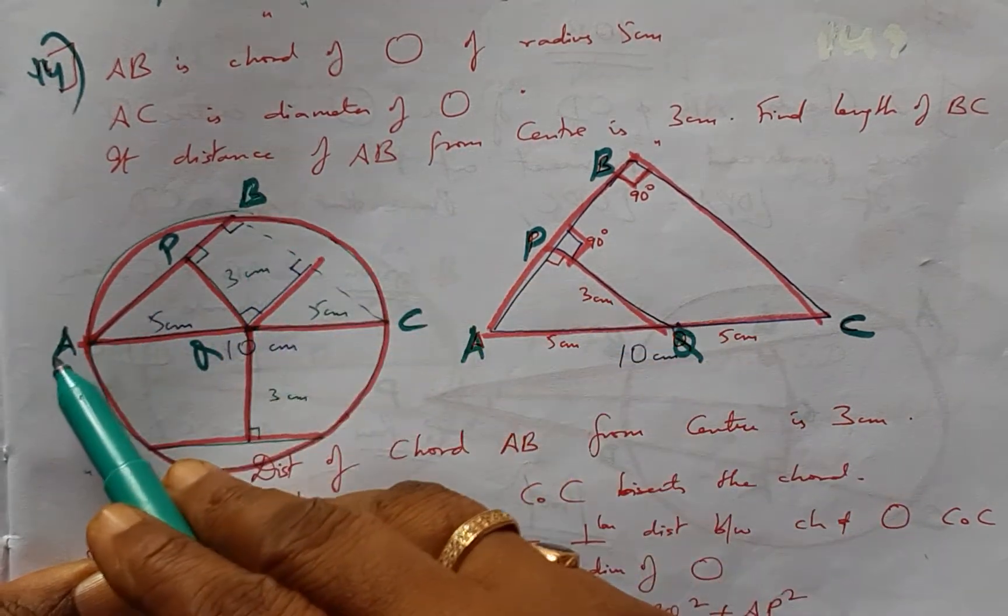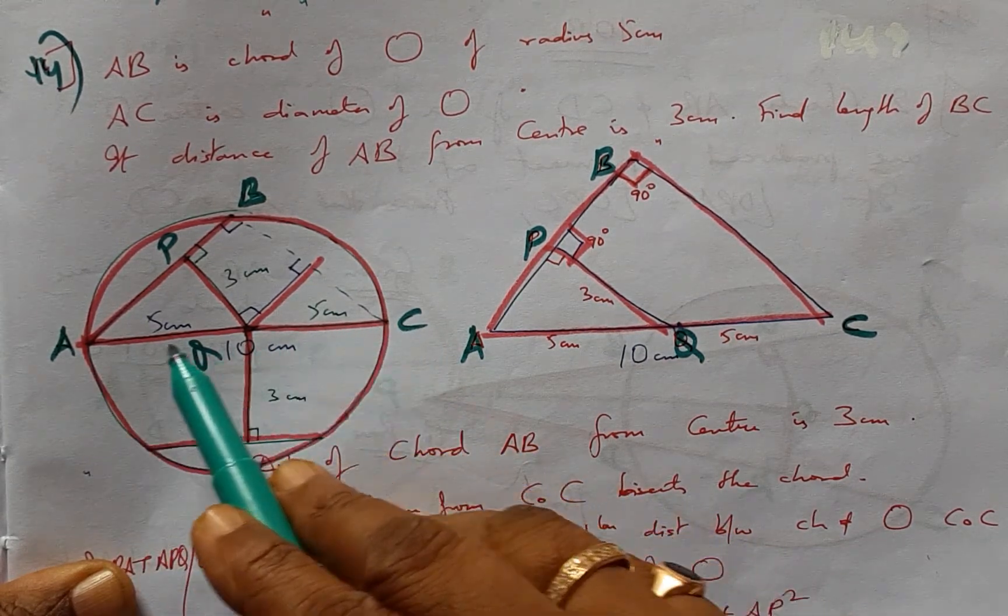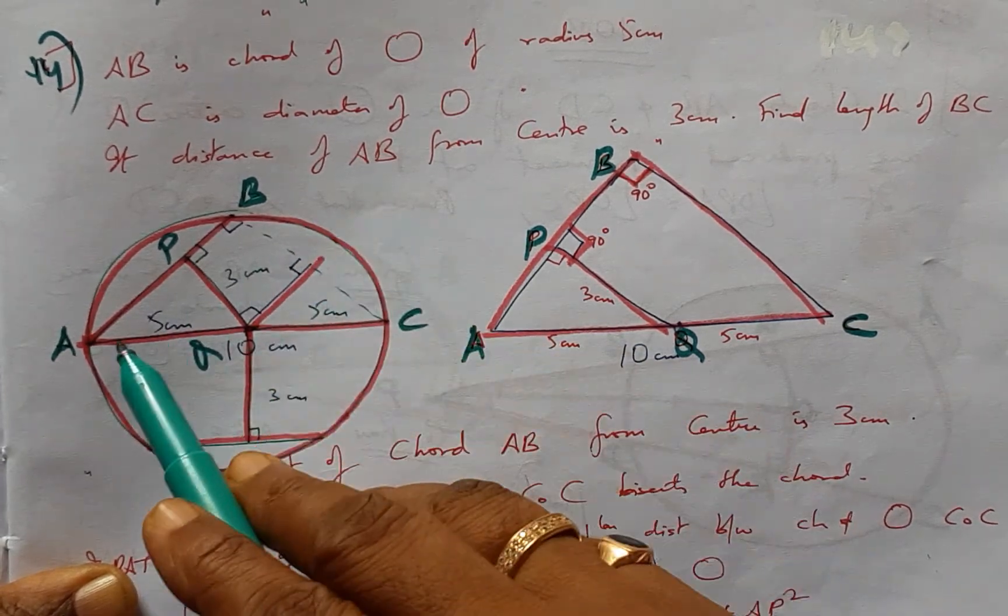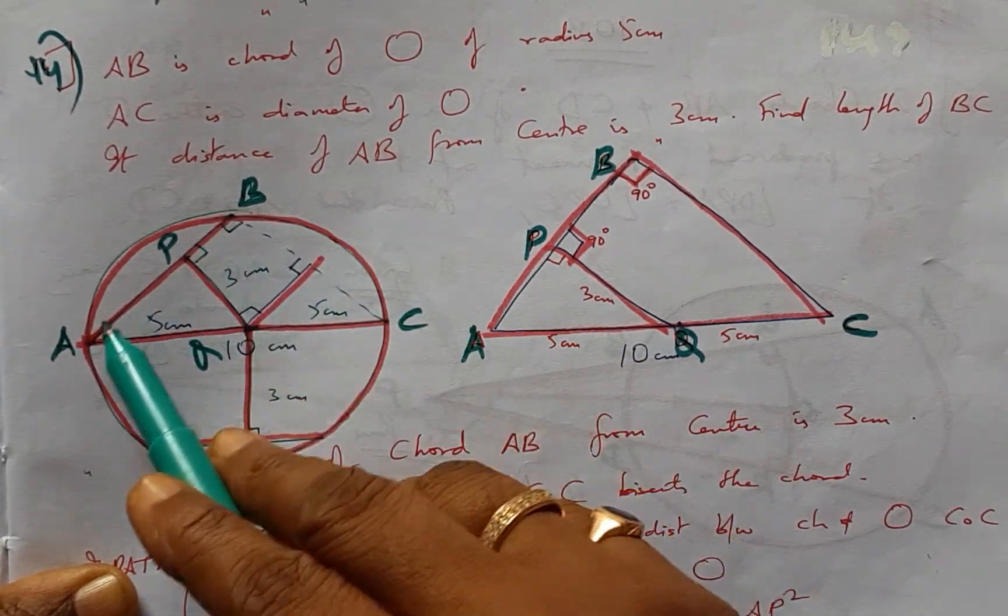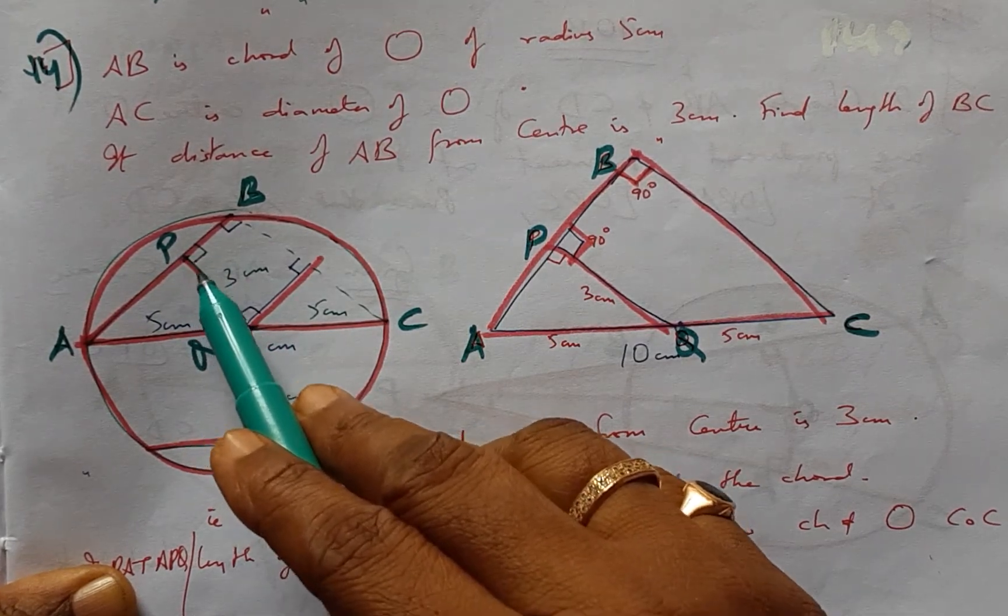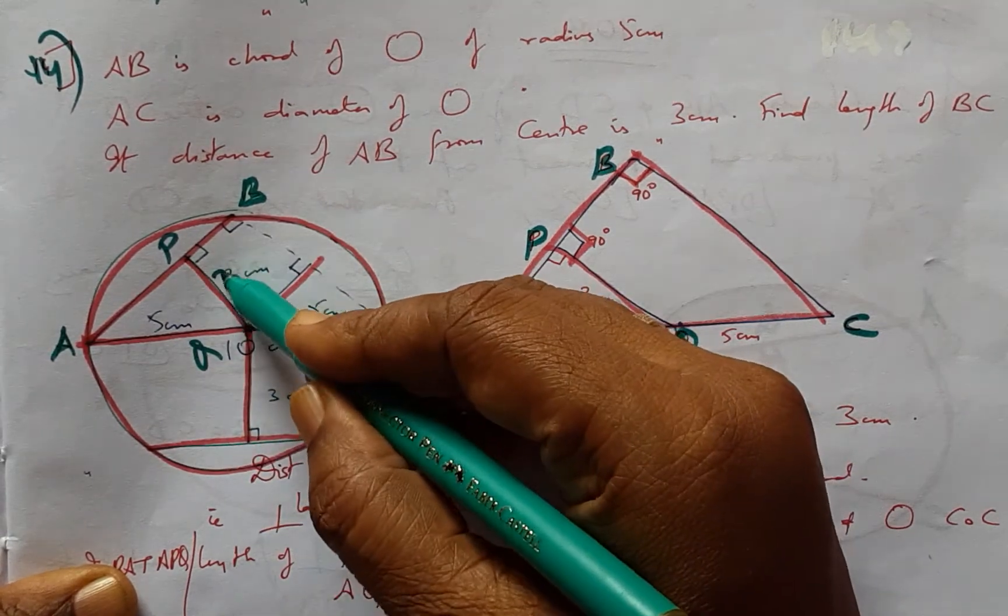Now AC is the diameter of the circle and therefore it is 10 cm. The distance of AB from the center is given as the perpendicular distance, which is the shortest distance. This perpendicular distance from the center is 3 cm, so PQ is 3 cm.